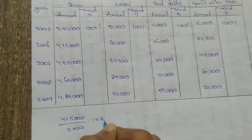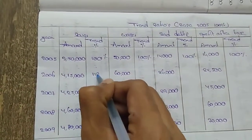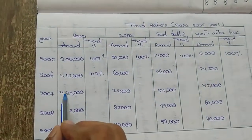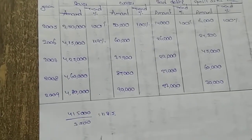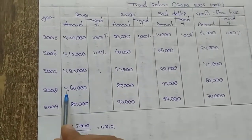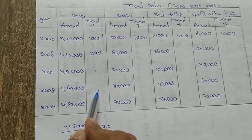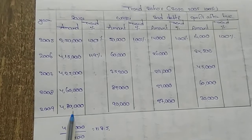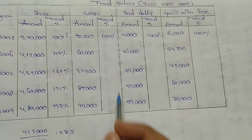The result for 2006 sales trend is approximately 118.57 — consider it as 119%. Next, 4 lakhs 25,000 divided by 3,500 gives the next percentage. Then 4 lakhs 60,000 divided by 3,500 gives the following year's percentage, and 4 lakhs 80,000 divided by 3,500 gives the final sales trend percentage.